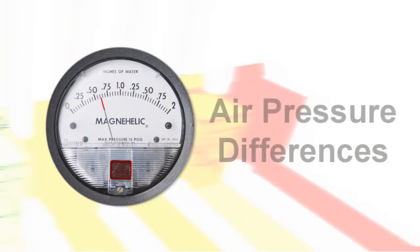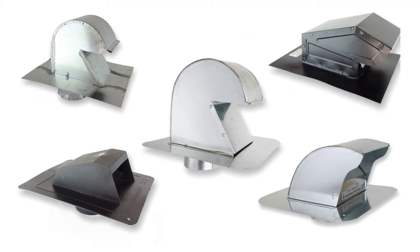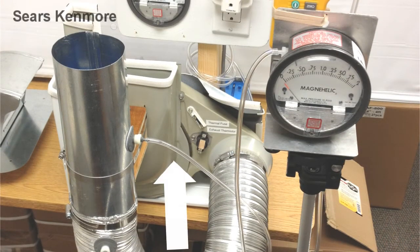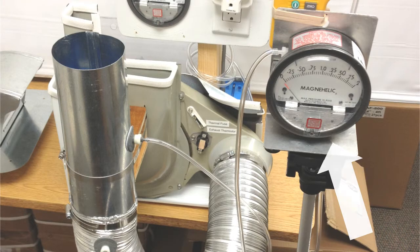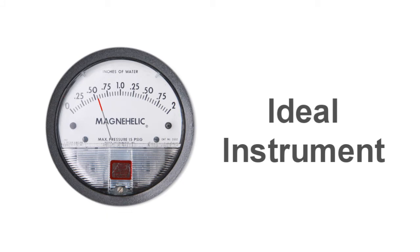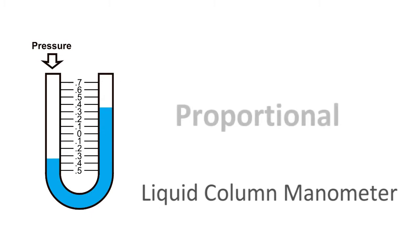This video will reveal the actual air pressure differences produced in five popular vent hoods. Our test apparatus comprises the actual blower unit from a Kenmore dryer and a MagniHelic gauge. In our industry, the MagniHelic gauge is the ideal instrument to accurately display the subtle levels in dryer exhaust, and works similarly to a liquid column manometer where the difference in fluid height is proportional to the pressure difference.